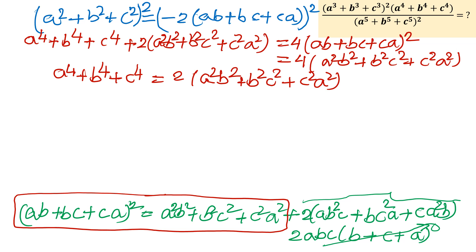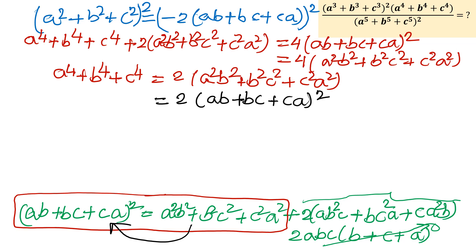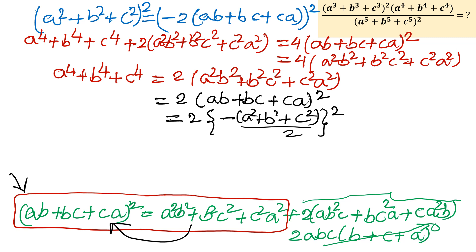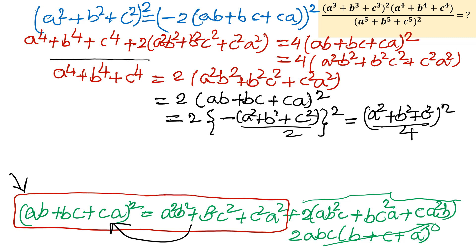Now you can check equation number 1. I will use equation number 1 and write A squared B squared — let me apply. From here I can write AB plus BC plus CA, whole square. From equation number 1, I can write 2 times, in bracket, minus A squared plus B squared plus C squared over 2, whole square. So whole square means denominator is 4, and numerator is A squared plus B squared plus C squared, whole square, over 4. Now you can see the relation between A to the power 4 plus B to the power 4 plus C to the power 4, and A squared plus B squared plus C squared, whole square.